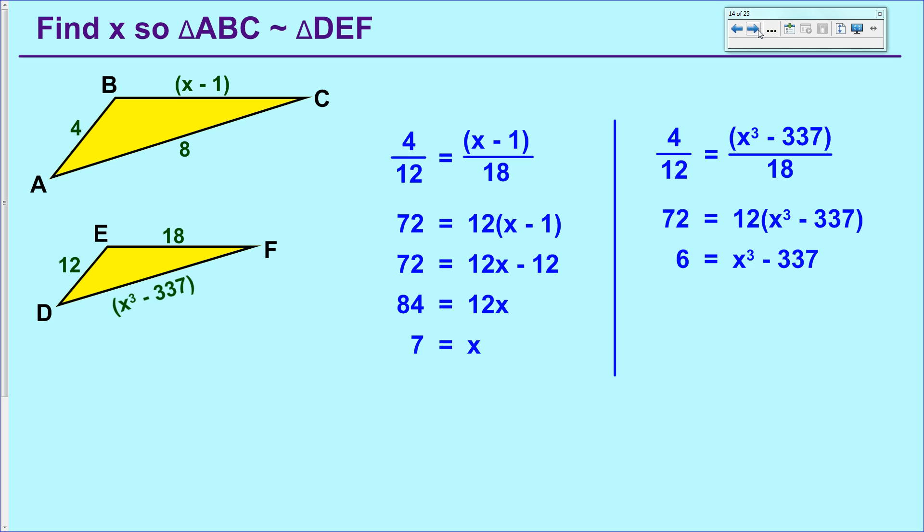From there, we'd really like to get that x with the exponent all by itself. So add 337 to both sides, and we have 343 equals x to the third. Now, I taught you that in order to undo a square, you take a square root. Well, there's also a cube root that you can take.